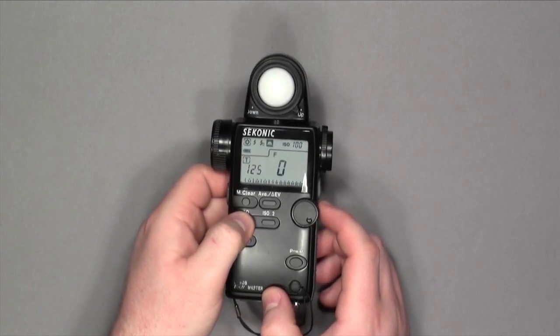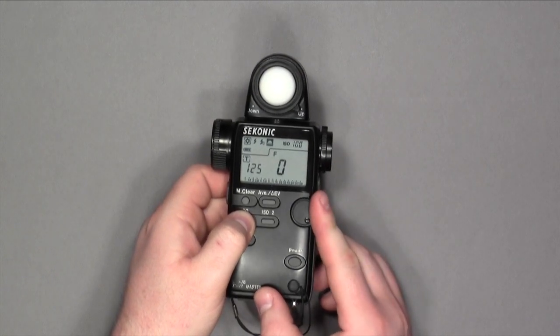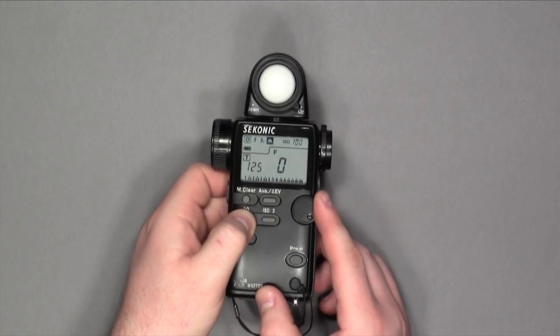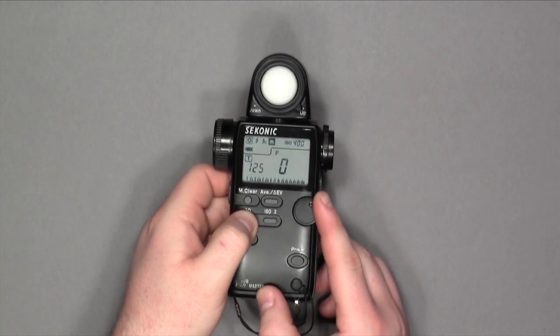Let's start by setting our ISO. For this tutorial, let's set our ISO to 400. We're going to turn our dial counter-clockwise to 400.